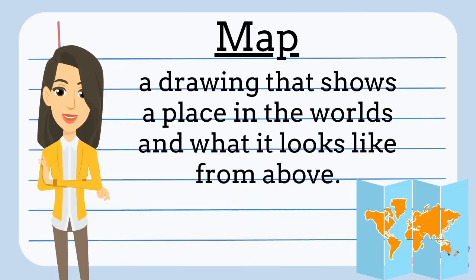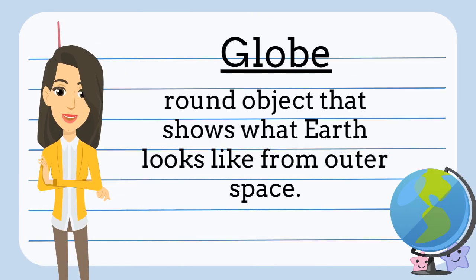A map is a drawing that shows a place in the world and what it looks like from above. A globe is round and it shows us what the Earth looks like from space.